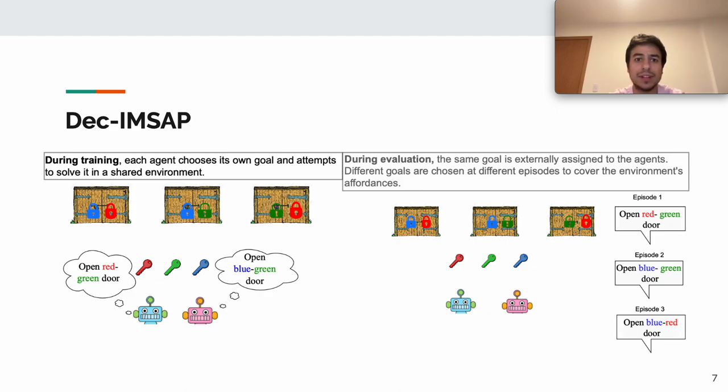In the Dec-IMSAP, we define the following training and evaluation paradigm. During the training phase, agents are autonomously setting their own goals and learning to achieve them in a fully decentralized manner, while during evaluation, we externally provide agents with the same goal. By doing so, we ensure that there is a fair evaluation of the group's ability to solve all possible cooperative tasks.